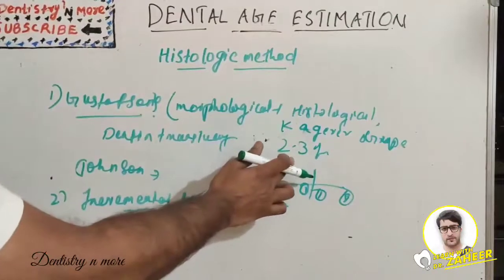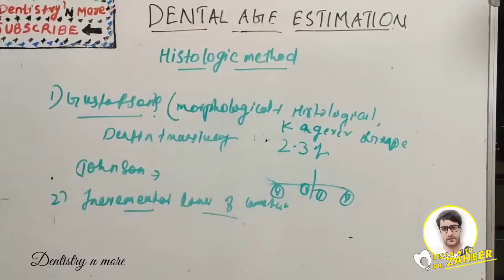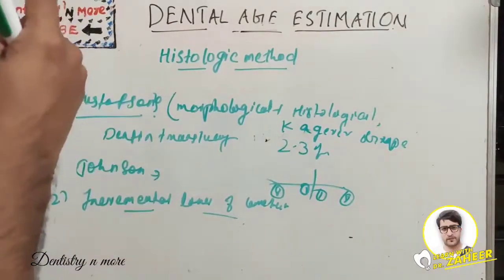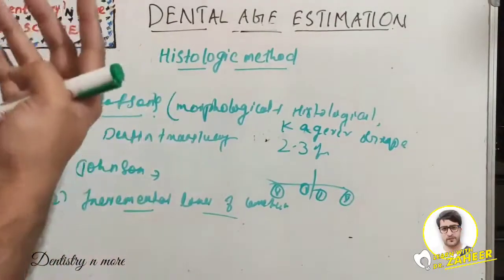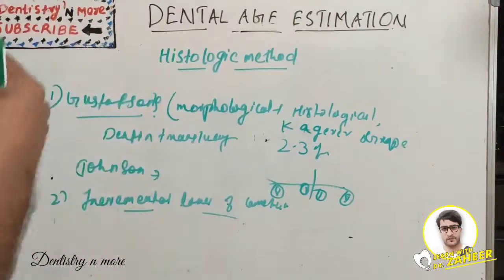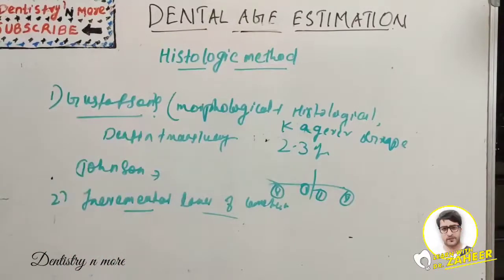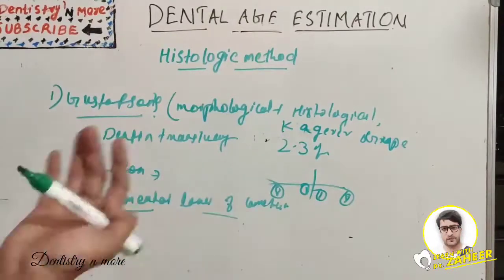These hypomineralized bands in the incremental lines can indicate pregnancy, skeletal trauma, or renal disorders. All can be related to the person's life history, which can facilitate identification.